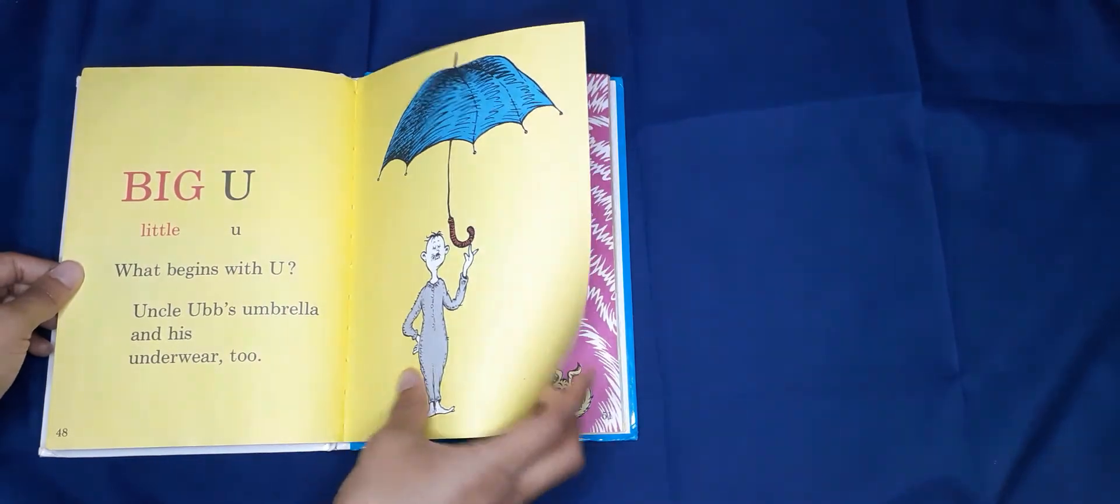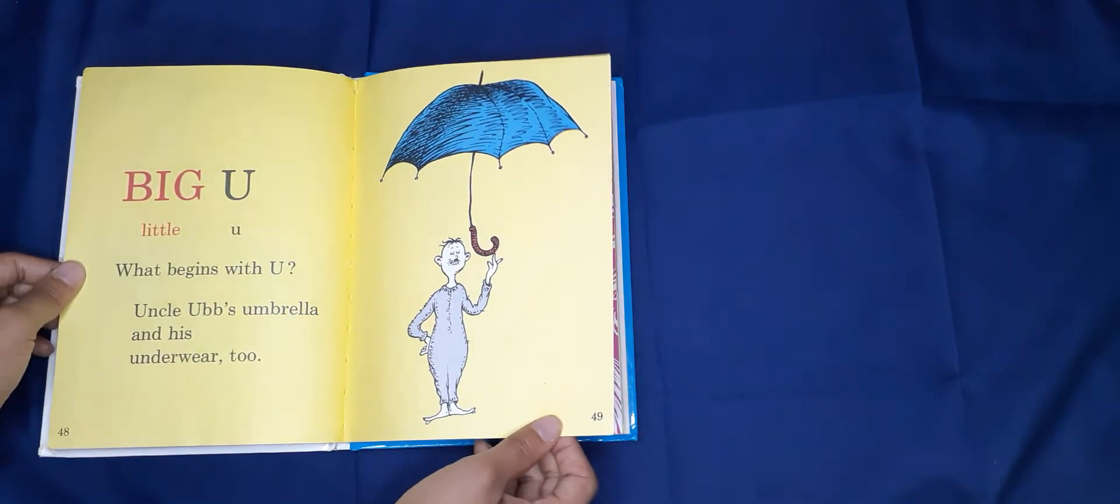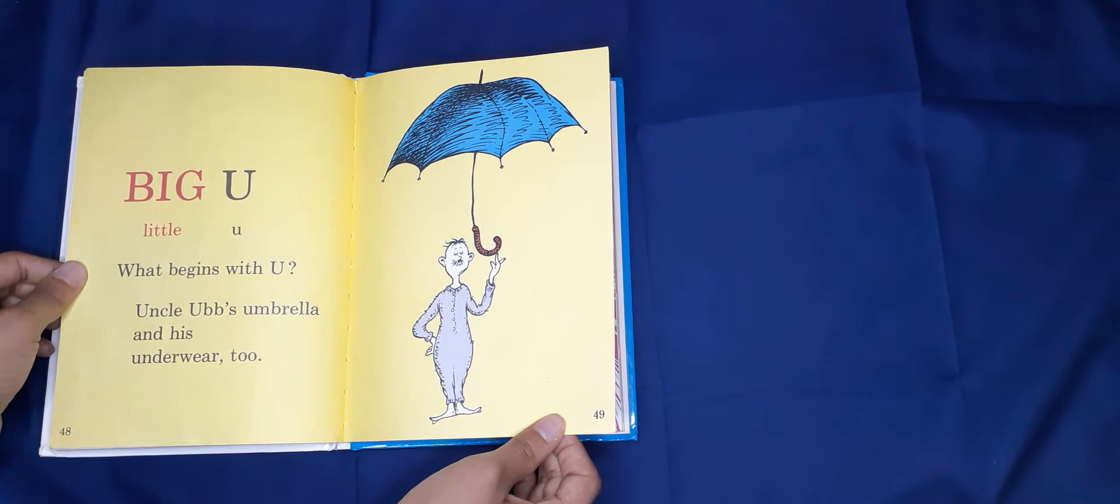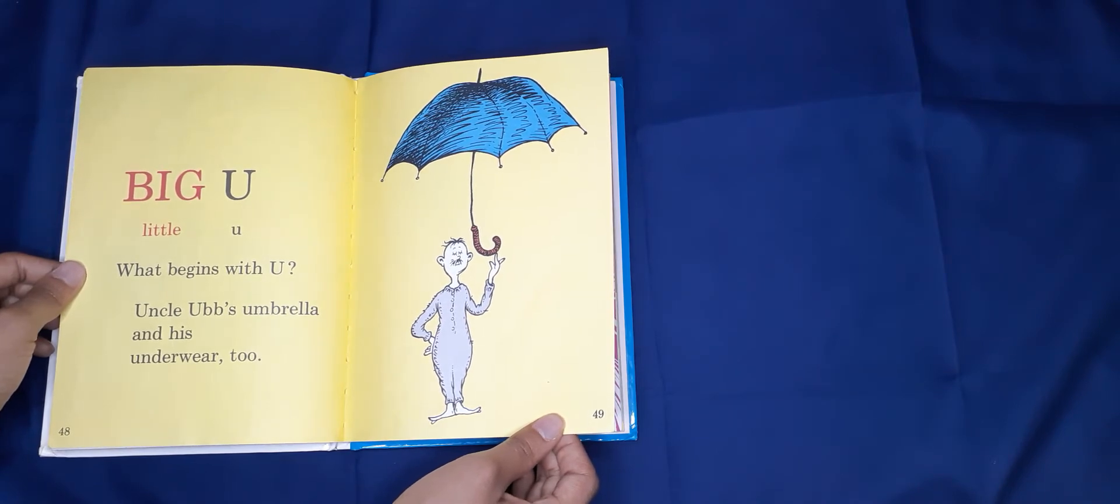Big U, Little U. What begins with U? Uncle Ub's umbrella and his underwear, too.